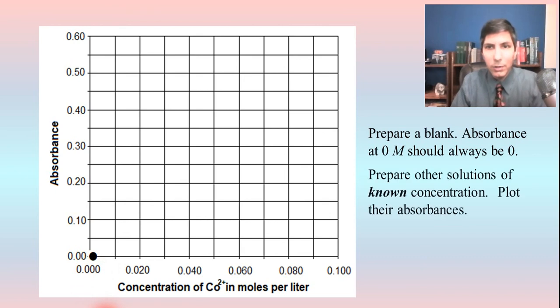Well, the next thing that you want to do is prepare a few other solutions of known concentration of whatever it is you're trying to find. And you plot those absorbances. So, maybe you find that at 0.02 molar, we get an absorbance of 0.10. And then we try it again at 0.06 molar, and it's about 0.35, somewhere in that neighborhood. And then we try a dot at 0.1 molar, and we have, oh, look at this, about 0.55. And we have those on the graph.